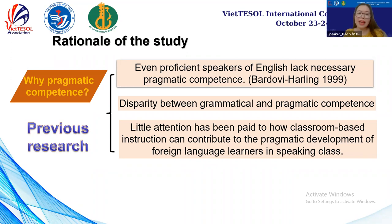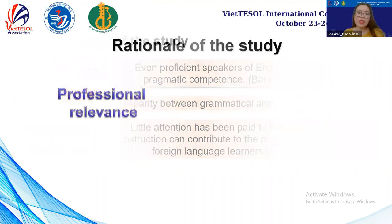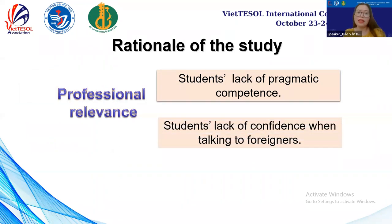As a result, the lack of pragmatic knowledge can lead to inappropriate behavior for foreign language learners. Even though they have a lot of structures and good vocabulary, they can still face breakdowns in social interaction. Noticing that many English learners lack necessary pragmatic competence, leading to a lack of confidence when talking to foreigners, I decided to do this study on how to apply role play activities to enhance students' pragmatic competence so that they can become more confident and successful in their social interaction.